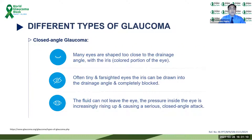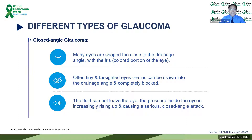In closed angle glaucoma, as I was referring to earlier where there are symptoms, these are eyes where the drainage angle is small and liable to close. This is more common in patients who are farsighted with plus numbers. Since the fluid cannot leave the eye, the pressure rises increasingly and causes a serious angle closure attack with symptoms of nausea, vomiting, headache, and redness.